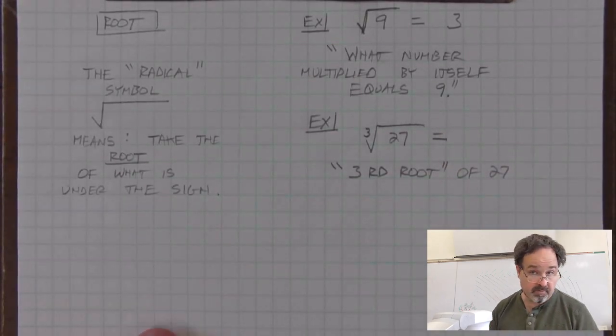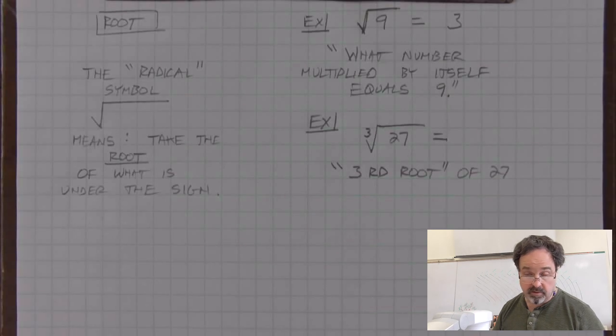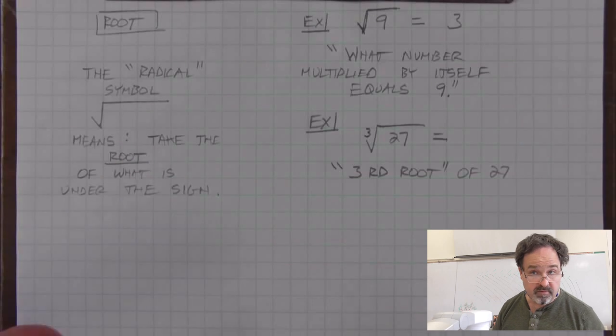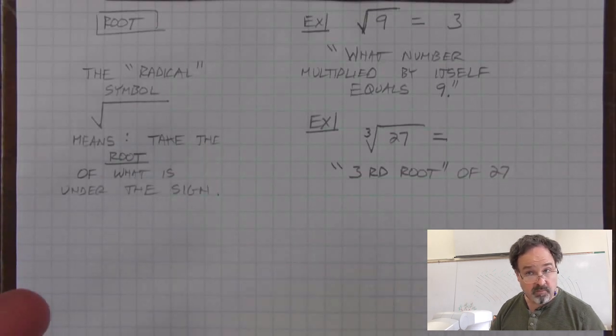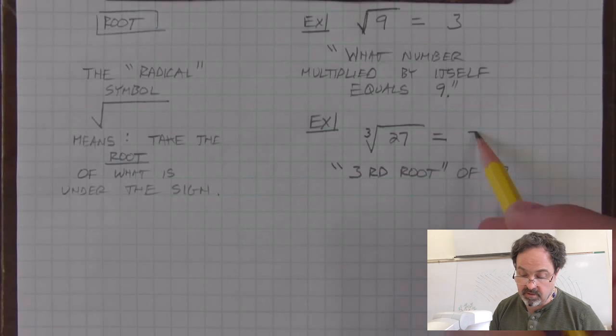We can guess and check, or use a calculator. Finding roots can be difficult to do in your mind. We may come across 3: when multiplied by itself is 9, and multiplied by itself again is 27. 3 times 3 times 3. So the cube root of 27 is 3.